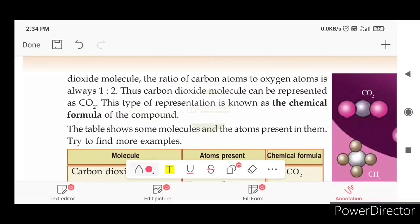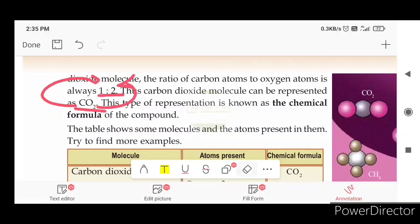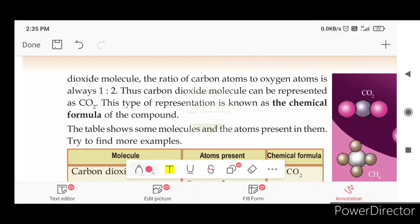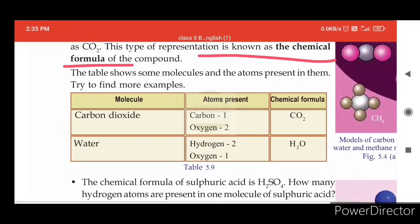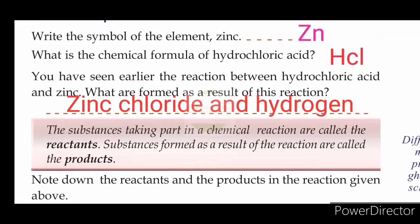The ratio of carbon atoms to oxygen atoms is always 1 is to 2. Carbon dioxide can be represented as CO2. This is the chemical formula of the compound. CO2 is the chemical formula. The substances taking part in a chemical reaction are called reactants.